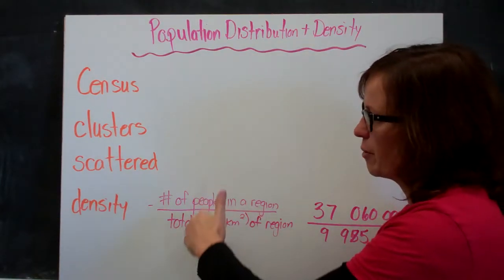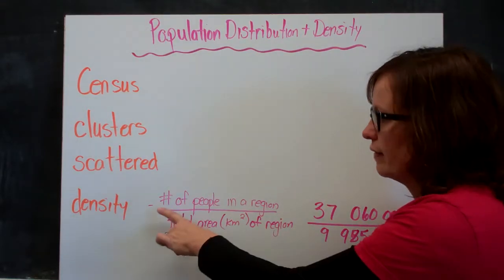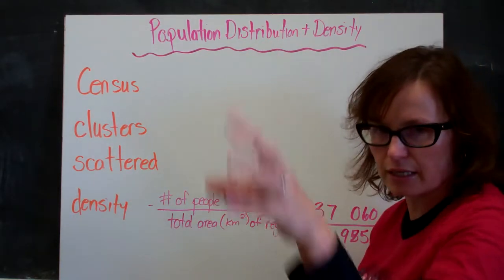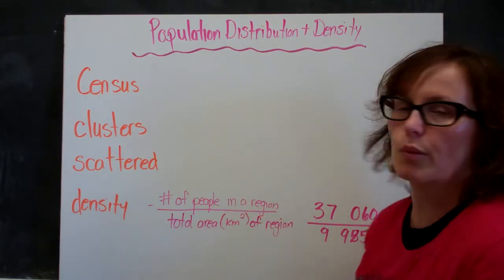The way they determine that is they calculate the population density. The way that's calculated is they take the total number of people in a region and divide it by the total area in kilometers squared of that region.